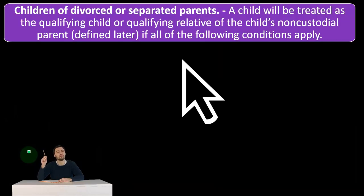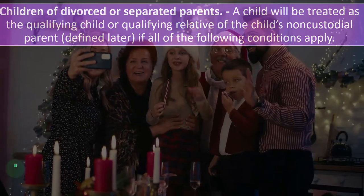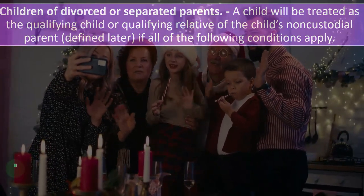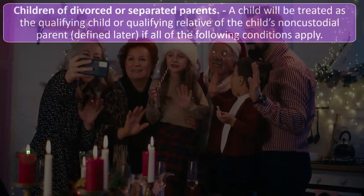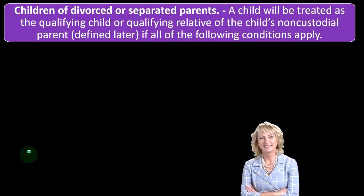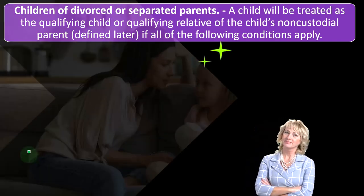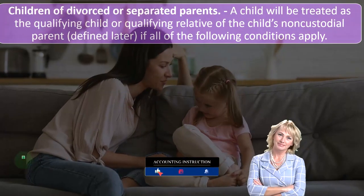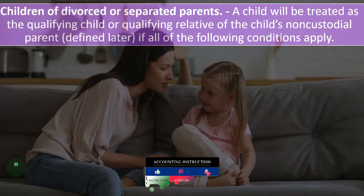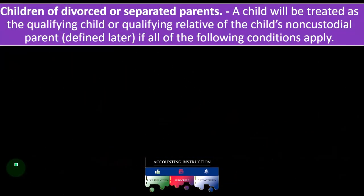Children of divorced or separated parents. A child will be treated as a qualifying child or qualifying relative of the child's non-custodial parent if all the following conditions apply. Remember, when we think about the test as to whether someone qualifies as a dependent, usually we're thinking about do they live with the taxpayer, was over half of the support given to them, and so on.